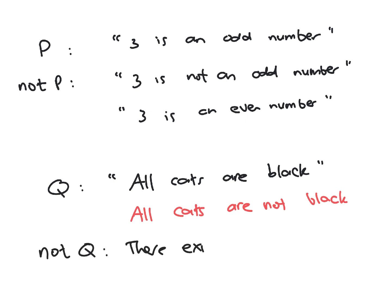So the correct way to negate q is: 'There exists a cat that is not black.' What I just wrote and 'all cats are not black' don't have the same meaning. We will talk more about how to negate statements. The keyword 'all' is something in mathematics that we call a quantifier. 'There exists' is also an instance of a quantifier. In a later video, we will talk about how to negate statements that contain quantifiers. For now, let's put a pin on it and move on with our content on logic.